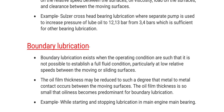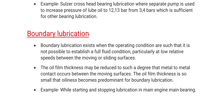Boundary lubrication exists when operating conditions are such that it is not possible to establish a full fluid film — particularly at low relative speed between the moving or sliding surfaces. The oil film thickness may be reduced to such a degree that metal-to-metal contact occurs between the moving surfaces. The oil film thickness is so small that oiliness becomes predominant. An example of boundary lubrication is during starting and stopping of the main engine main bearing.